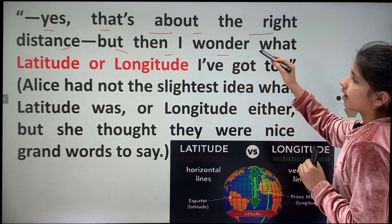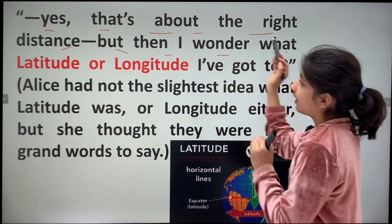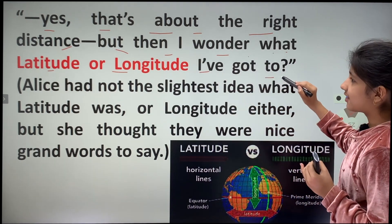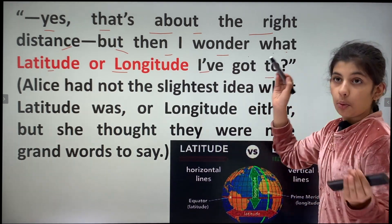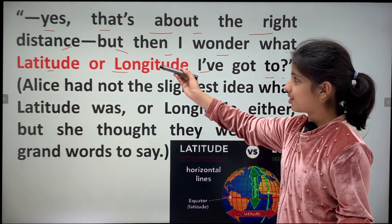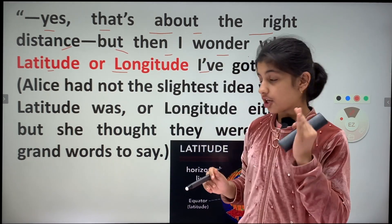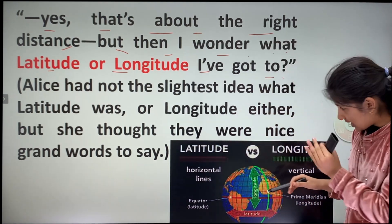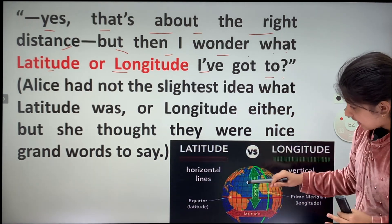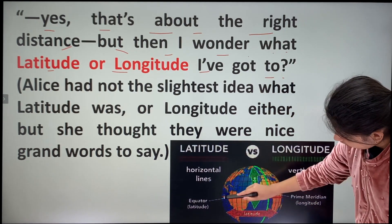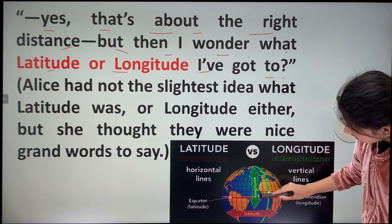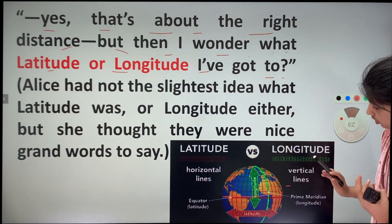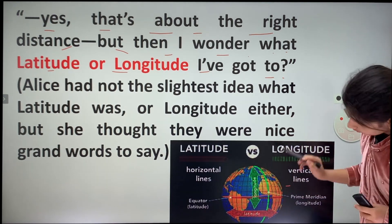I wonder what latitude or longitude I've got to. What is this latitude or longitude? Latitude or longitude is like this. See, latitude is the horizontal lines on the earth's surface used to mark a position on the earth.